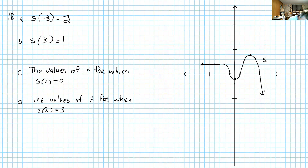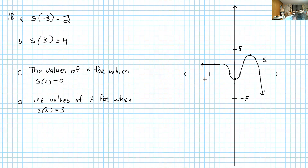I haven't labeled the scales on this graph. If I don't label them, assume that each square is 1 unit. So this would be like 5 and negative 5 on each axis. If it differs from that, I definitely will have labels.